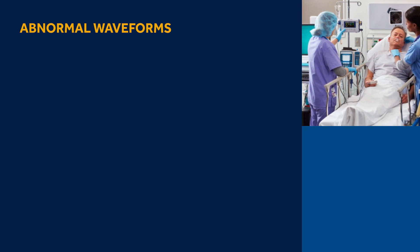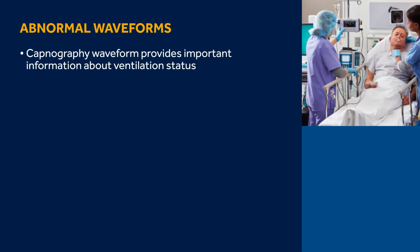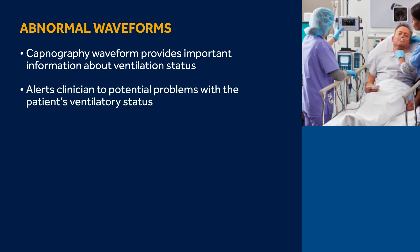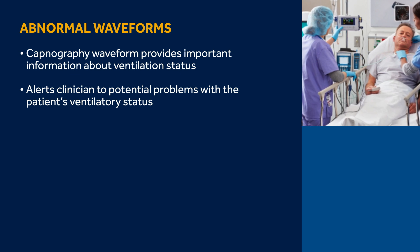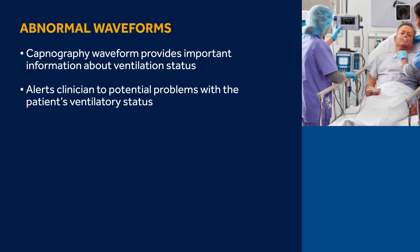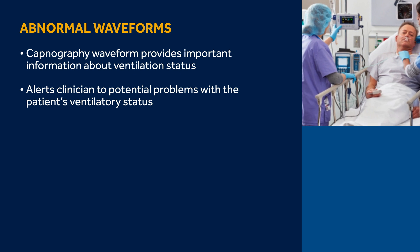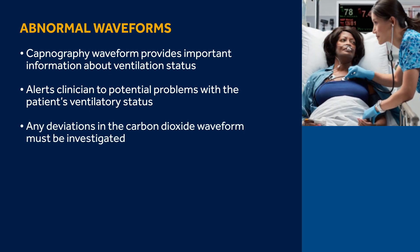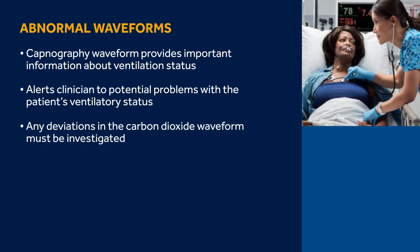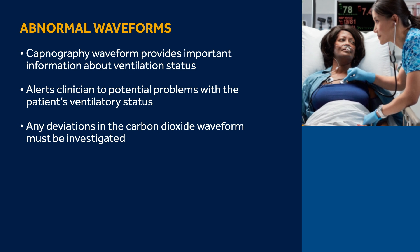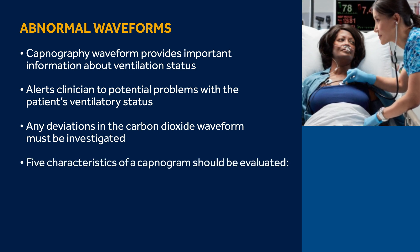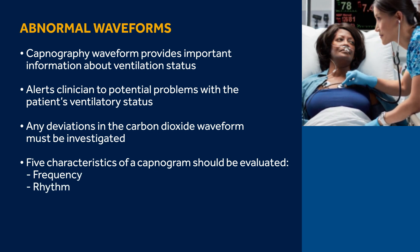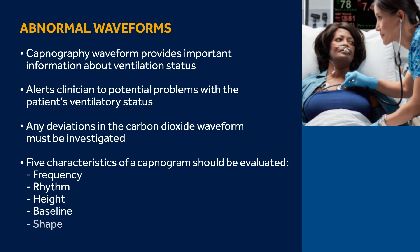Similar to the end-tidal CO2 value, the capnography waveform provides important information about ventilation status. When the waveform deviates from normal, the clinician will be alerted to potential problems with the patient's ventilatory status. The shape of a capnogram is identical in all humans with healthy lungs. Any deviations in the carbon dioxide waveform must be investigated to determine a physiological or pathological cause. There are five characteristics of a capnogram that should be evaluated: frequency, rhythm, height, baseline, and shape.